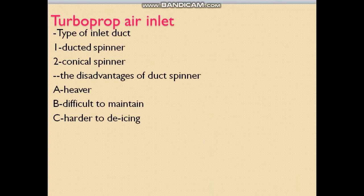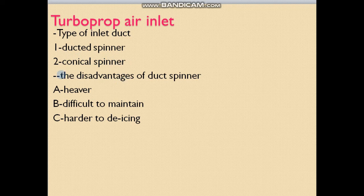Now we will talk about the turboprop air inlet. The types of inlet duct are the ducted spinner and the conical spinner. The disadvantages of the ducted spinner are that it is heavier, difficult to maintain, and harder to de-ice.